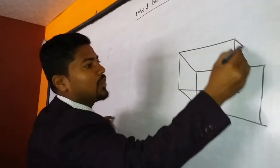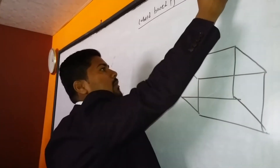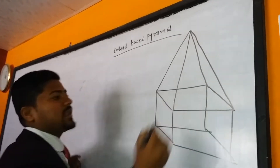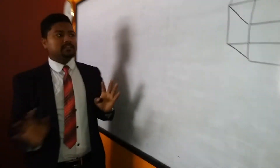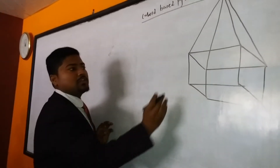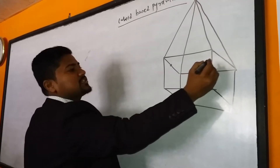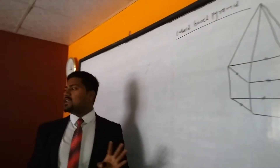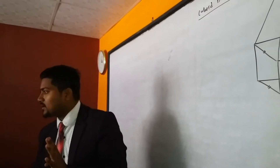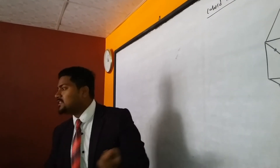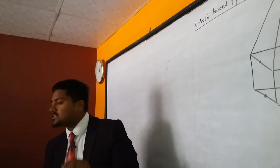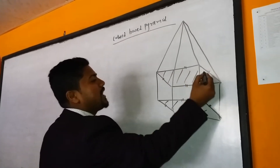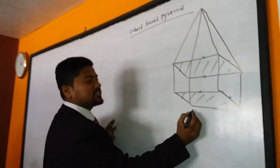This is our cuboid. Above it, I am going to make a pyramid. So now this is the cuboid-based pyramid. Here, length and breadth are equal, so the base is square. In the SEA exam, the base is always given as square. Even if not, we can find it, but for SEA exam, this base is square.